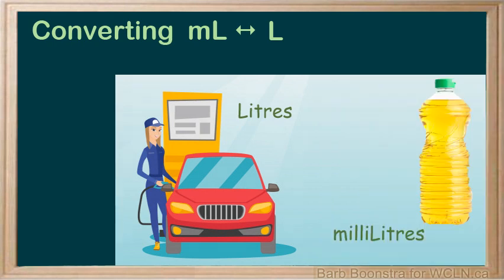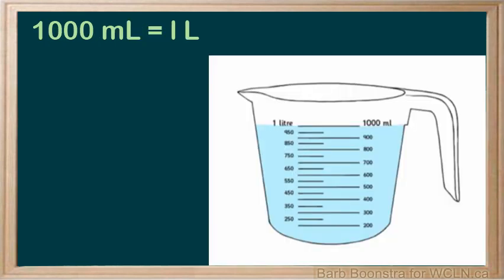When cooking oil is purchased, it is measured in milliliters. One liter is equal to a thousand milliliters. The prefix milli stands for one thousandth.